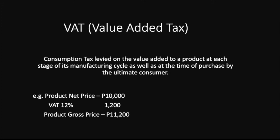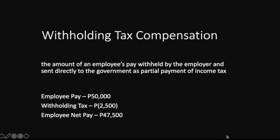Withholding tax on compensation is the amount of an employee's pay withheld by the employer and sent directly to the government or BIR as partial payment of income tax. For example, if an employee's pay is 50,000 for the month, you deduct the corresponding withholding tax based on the BIR tax matrix — say 2,500 at 5% — and issue the employee 47,500, then remit the 2,500 to the BIR in the next period.